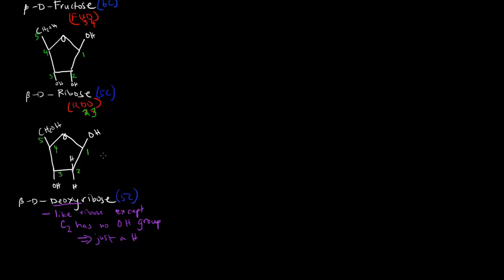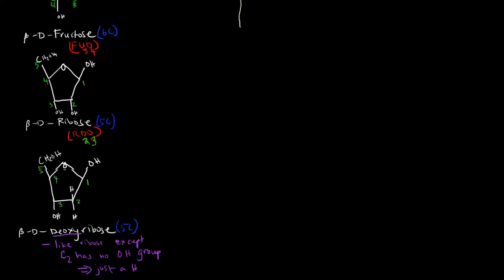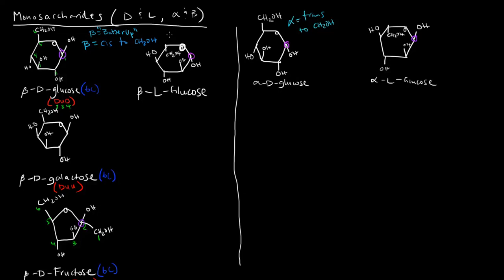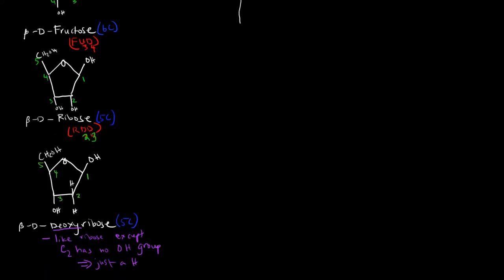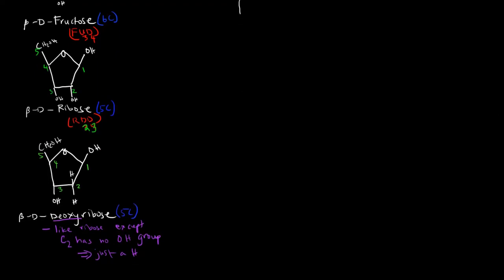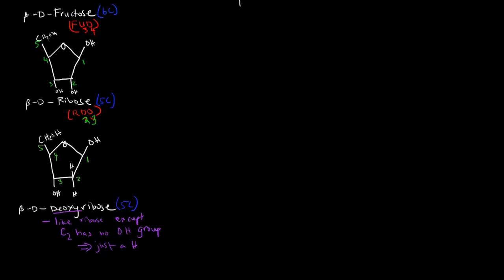If you want to draw any of the other forms, you would simply manipulate them: if you want to turn it from a D to an L sugar, you just take everything that was up and put it down, and everything that was down and put it up. Keep in mind that beta has to be cis to the CH2OH, and alpha has to be trans to the CH2OH. I'll post a PDF along with this video so you can see how the remainder of these drawings look. I hope that was helpful — good luck studying this stuff.